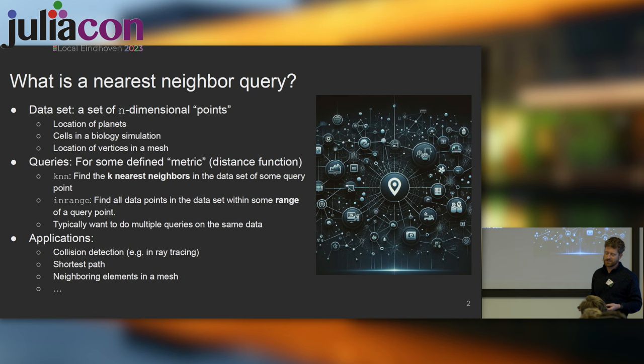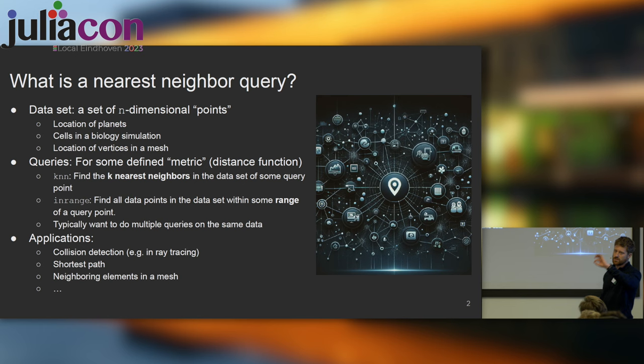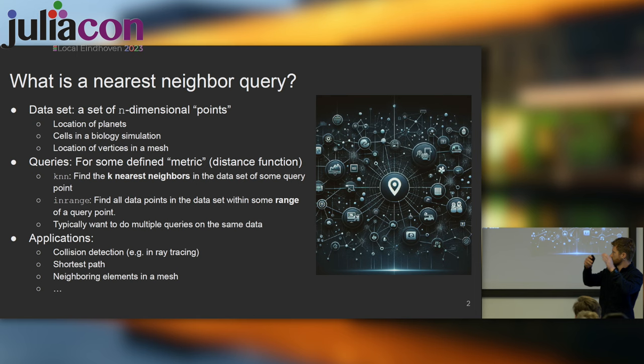For some distance function we can ask questions like KNN, which stands for finding the K nearest neighbors in the dataset for some query point. So we have a point and we want to find the 10 nearest neighbors to it. Or we can have an in-range query, where we have a point and want to find all other points within some range. We often want to do multiple queries on the same data — many many times.